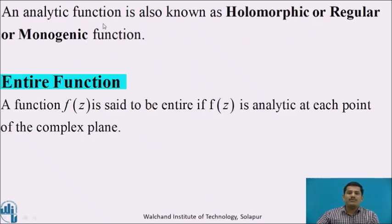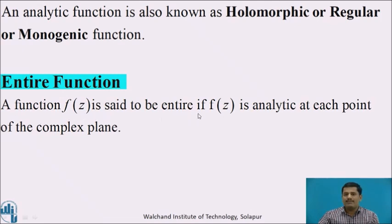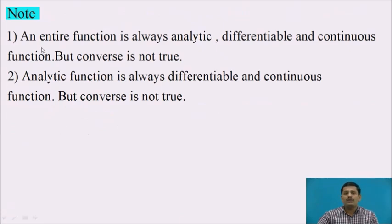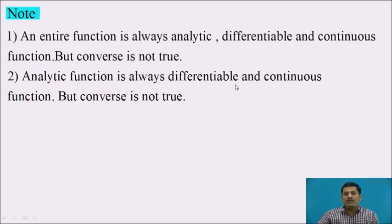An analytic function is also known as holomorphic, regular, or monogenic function. One more definition: entire function. A function f of z is said to be entire if f of z is analytic at each point of the complex plane. An entire function is always analytic, differentiable, and continuous, but the converse is not true. Also, an analytic function is always differentiable and continuous, but the converse is not true.